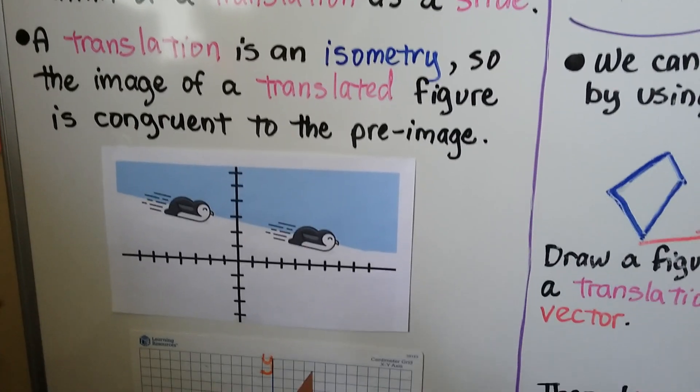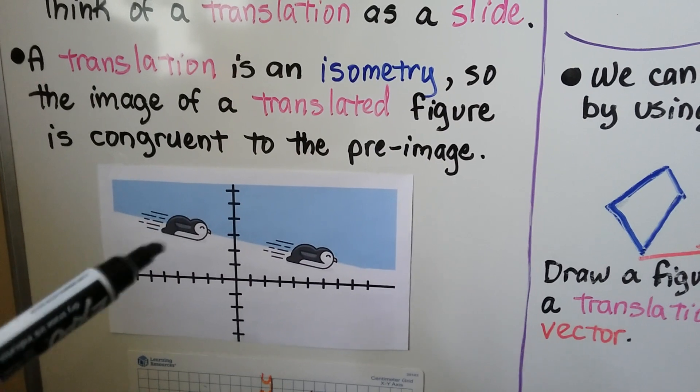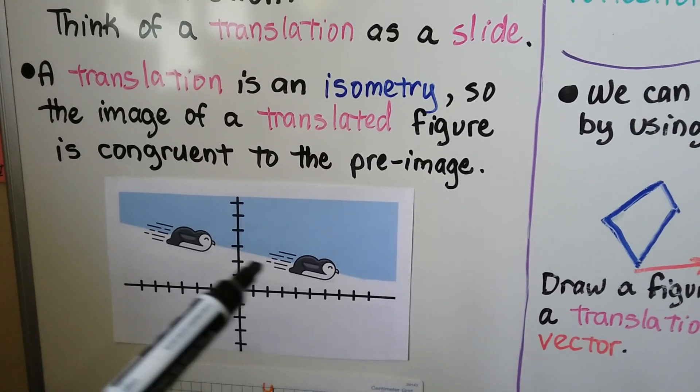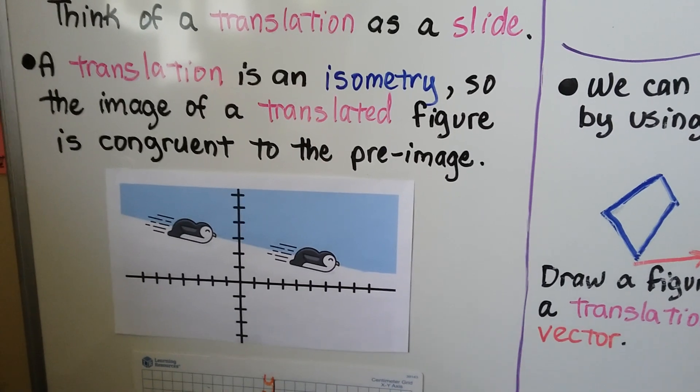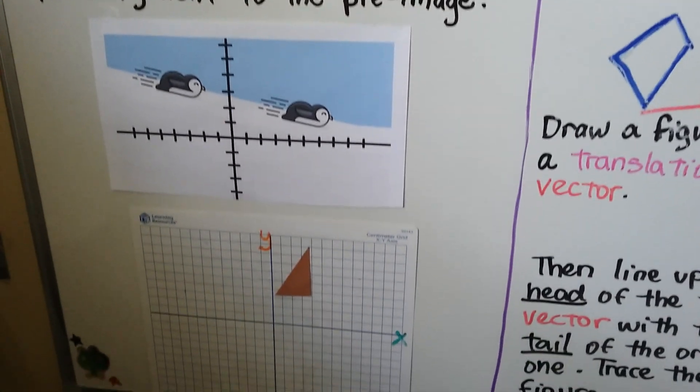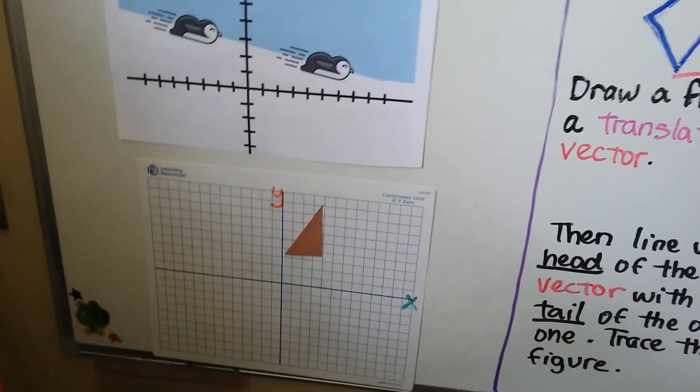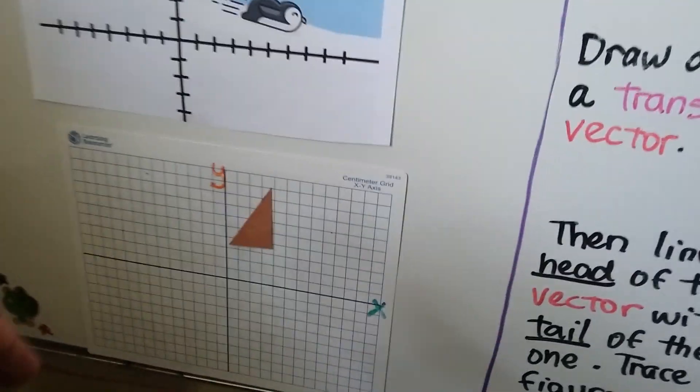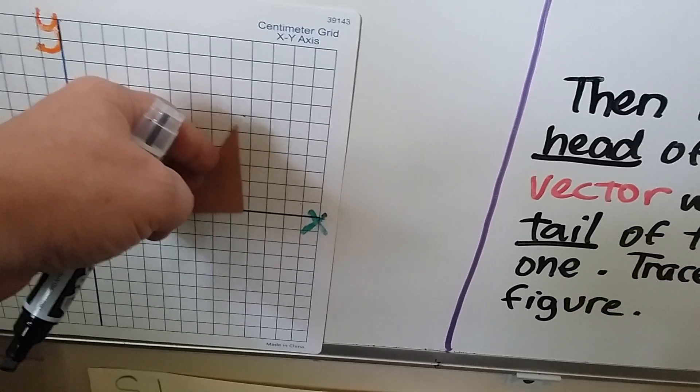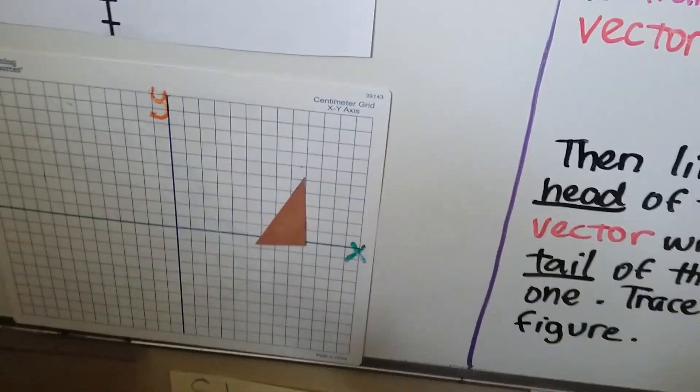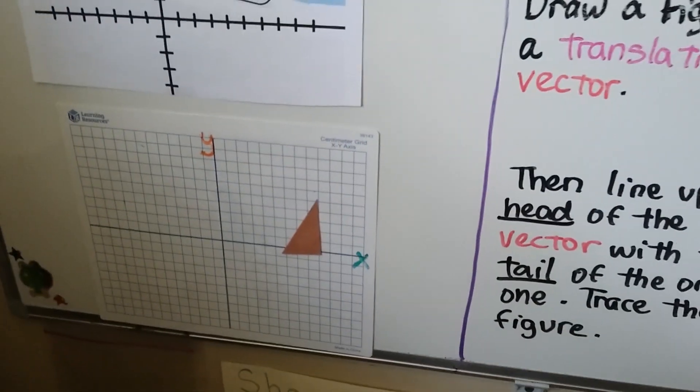So this little penguin is in quadrant 2, and we can translate him to quadrant 1 by just sliding him like he's sliding on ice. If we've got a triangle in the coordinate plane, all we have to do is slide it to translate it. We can slide it to any place on the coordinate plane.